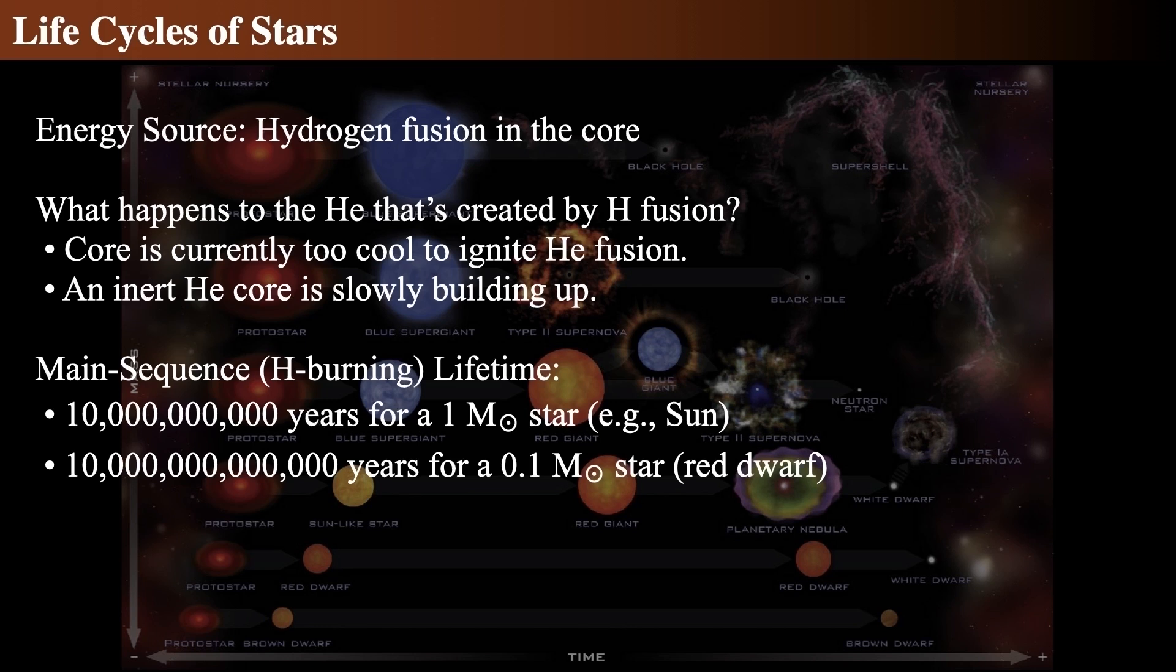Well for stars like the sun, the core is too cool to ignite helium fusion. And by hot, we mean of course that the helium nuclei in the core are not moving fast enough to have decent chance of overcoming the Coulomb barrier and therefore quantum tunneling into close enough proximity to fuse. This all means that an inert helium core is slowly building up in the center of the sun.